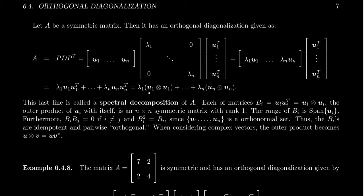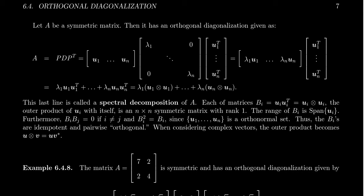We have an outer product, not an inner product. You're going to get U1 tensor U1, lambda_2 U2 tensor U2, all the way up to lambda_N U_N tensor U_N. And so this sum is what we call the spectral decomposition: A equals the sum of all of these matrices. Now these outer products U1 tensor U1, U2 tensor U2, U3 tensor U3 — we're going to abbreviate those as B_i. So B_i is U_i tensor U_i, which is the outer product U_i times U_i^T.